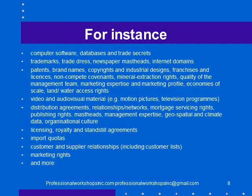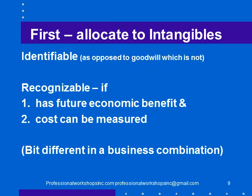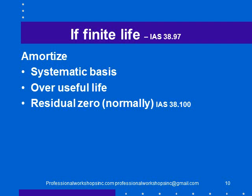There's an awfully long list of intangible assets, which is why I say that if you purchased a subsidiary you should know why you did it and allocate to all of these things. Goodwill is truly unidentifiable — you're saying you have no idea why the subsidiary makes so much money, it just does, and that's a little dangerous. Intangible assets have to be identifiable, recognizable, have a future economic benefit, and the cost must be measurable. If an intangible asset has a finite life, it must be amortized on a systematic basis over its expected useful life, with the residual amount normally being zero.